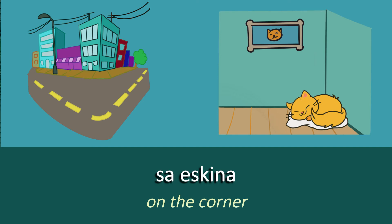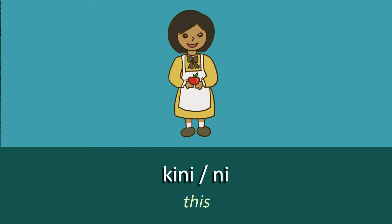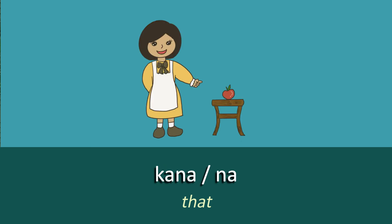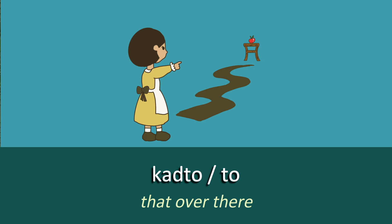Our next word is 'This'. We say 'Kini', or 'Ni' for short. This is Kini, or the short form Ni. And the opposite of this — 'That' — is 'Kana', or 'Na' for short. Kana, or the short form Na.